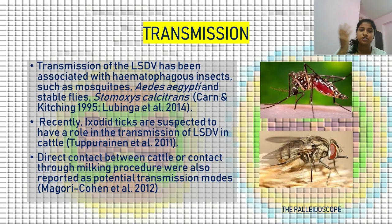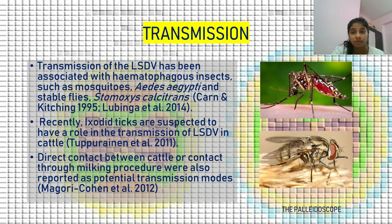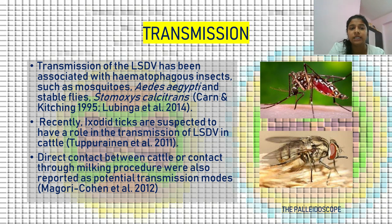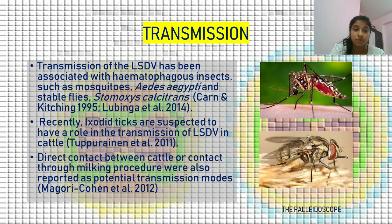Transmission is mainly by two insects: one is the mosquito Aedes aegypti, and the other is the stable fly Stomoxys calcitrans. Recently, certain ticks are suspected to have a role in the transmission of LSDV in cattle. Direct contact between cattle or contact through milking procedures has also been reported as a potential transmission mode.